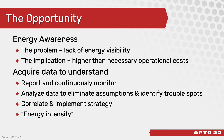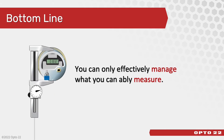Another concept to be aware of is energy intensity — that is the amount of energy used per product produced. A lot of forward-thinking companies are actually including the amount of energy used to produce a given product into the bill of materials. The bottom line, and I'm sure you've heard this before: you can only manage what you can measure.